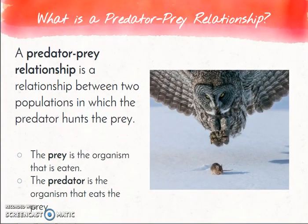Let's start with the predator-prey relationship. This is a relationship between two populations where one hunts the other — the predator hunts the prey. The predator benefits because it is eating an organism and gaining nutrition from it. The prey is the organism being eaten, so it is being harmed — it's no longer surviving. In this picture, the owl is an example of a predator and the mouse is an example of prey.